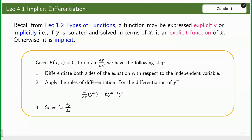Given an implicit function in the form f(x, y) = 0, to obtain the derivative of y with respect to x, we have the following steps. First, differentiate both sides of the equation with respect to the independent variable. Second, apply the rules for differentiation — we use the power formula for the differentiation of y raised to n. And third, solve for the derivative of y with respect to x explicitly.